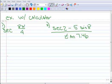Okay, here's a couple examples of how to use your calculator to find trig functions that you don't have a button for. So let's start here with example 1 with the secant.